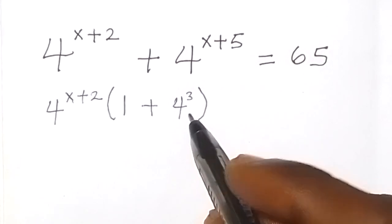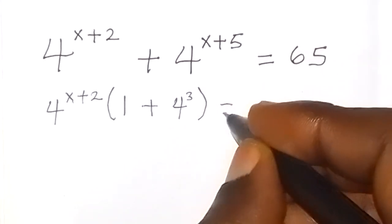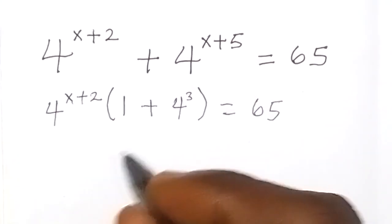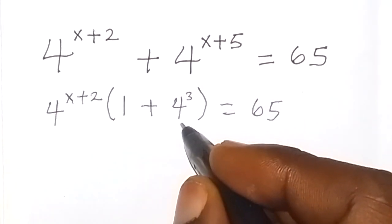That's remaining 4 raised to power 3, then equals to 65. And from there, 4 raised to power 3 is 64.